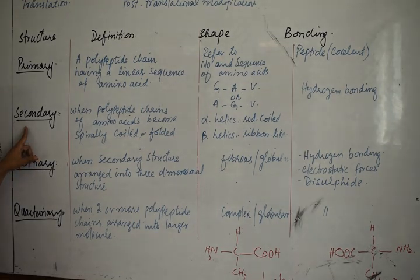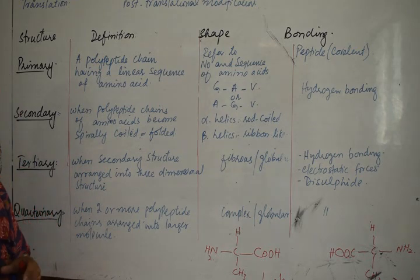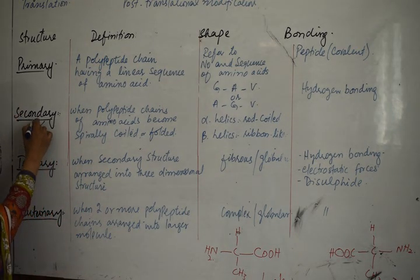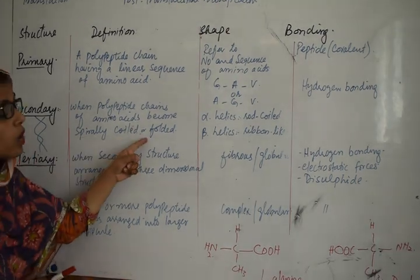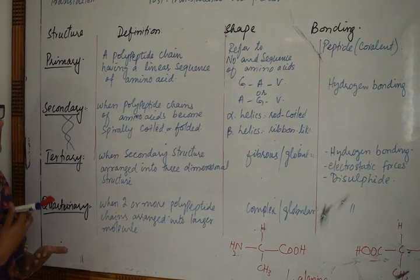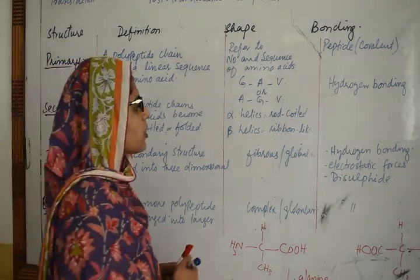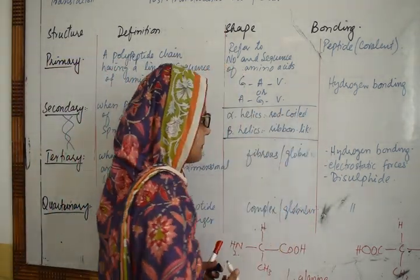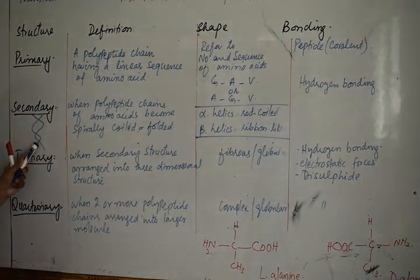The second is the secondary structure. Similar to how DNA forms a helical structure, when the polypeptide chain of amino acids becomes spirally coiled and folded, this is called the alpha helix. If you look at the rod from the point, you can see the alpha helix.